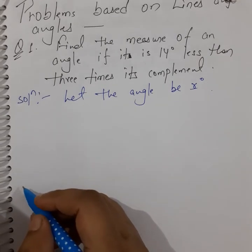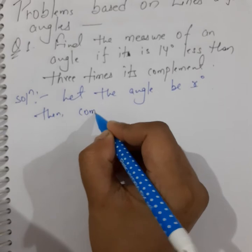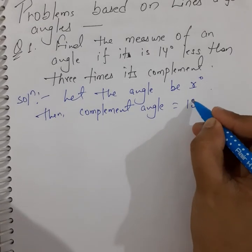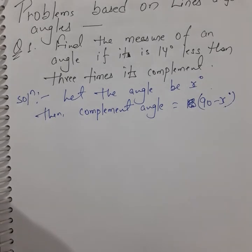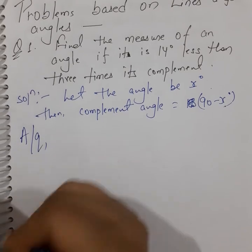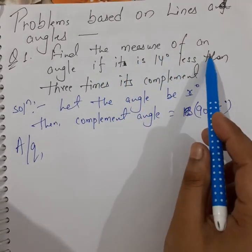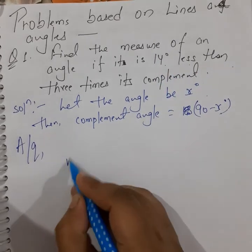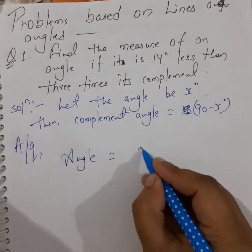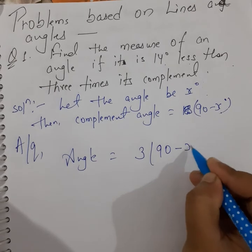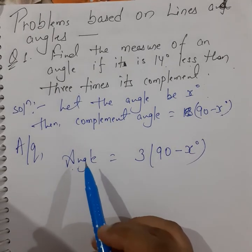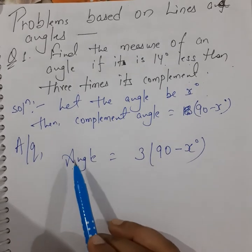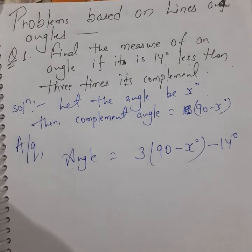If the angle is x degrees, we need to find the complement angle. The complement angle is 90 degrees minus x degrees. According to the question, the angle is 14 less than 3 times its complement, so 3 times the complement is 3(90 − x).